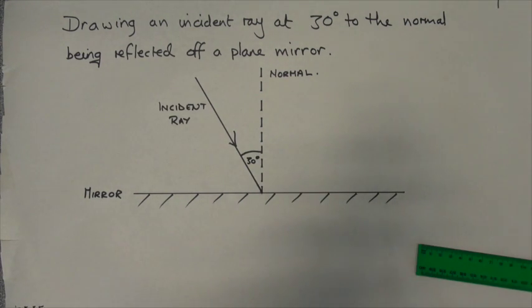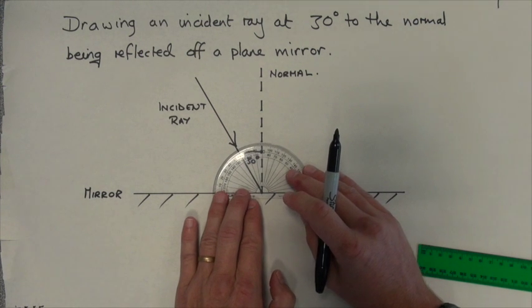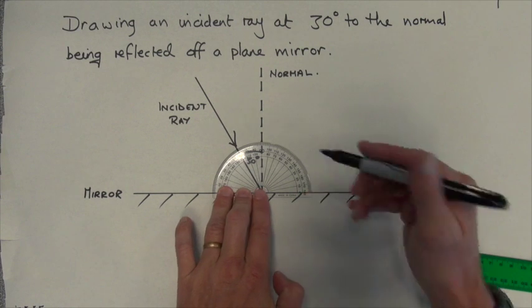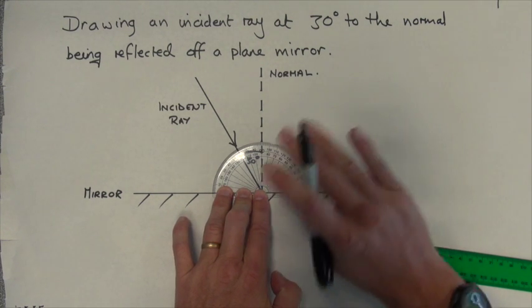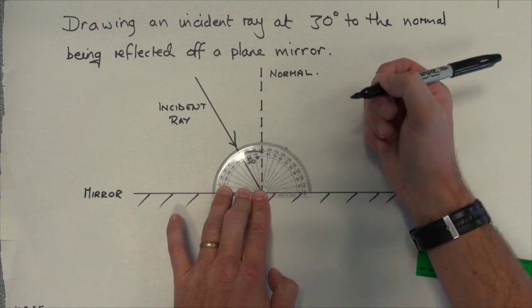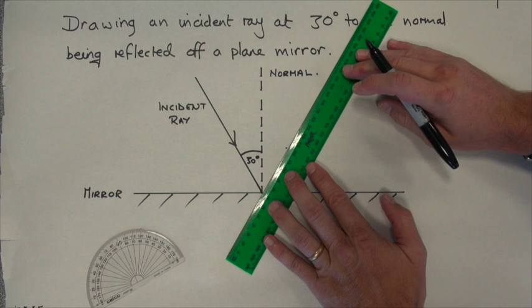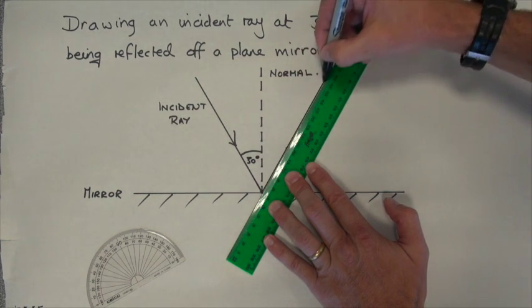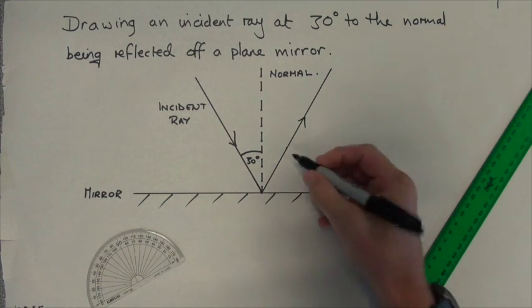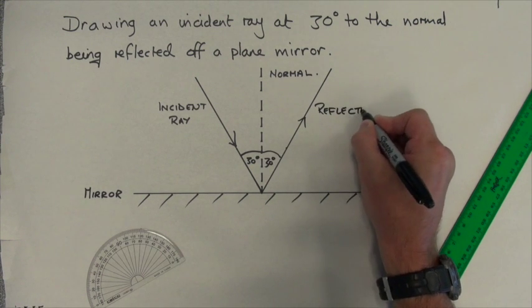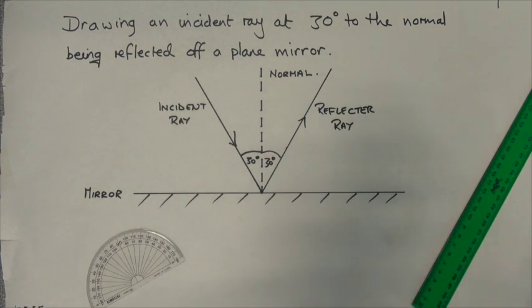Now I'll draw the reflected ray. I put my protractor on and measure 30 degrees. Hang on, that's not to the normal—we've got to go from the normal. That's better. I go from the normal and draw in my 30 degrees line. I put an arrow to show the direction that's bouncing off, mark the angle as 30 degrees, and label it as a reflected ray. Remember, the law of reflection states the incident ray equals the reflected ray.